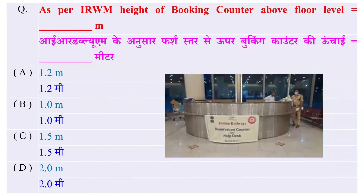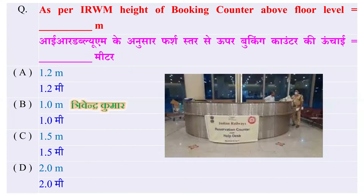As per IRWM, height of booking counter above floor level — IRWM के अनुसार फर्श स्तर से ऊपर booking counter की ऊँचाई कितनी meter होनी चाहिए? Options: 1.2 meter, 1 meter, 1.5 meter, या 2 meter — and the right answer is 1 meter।